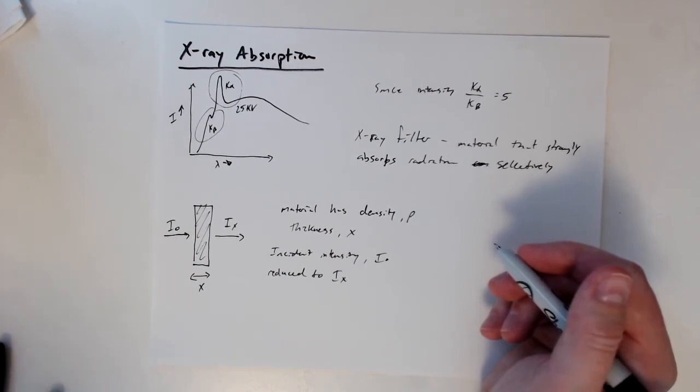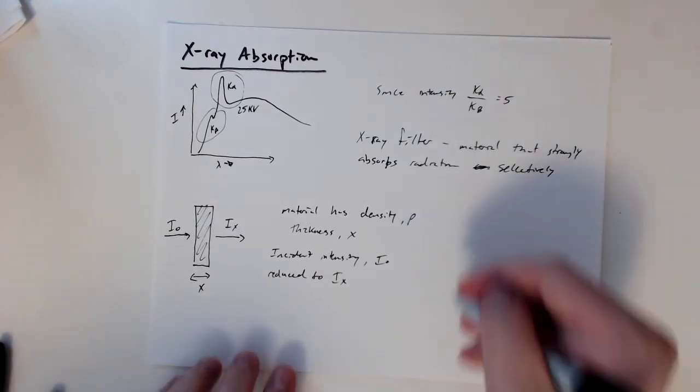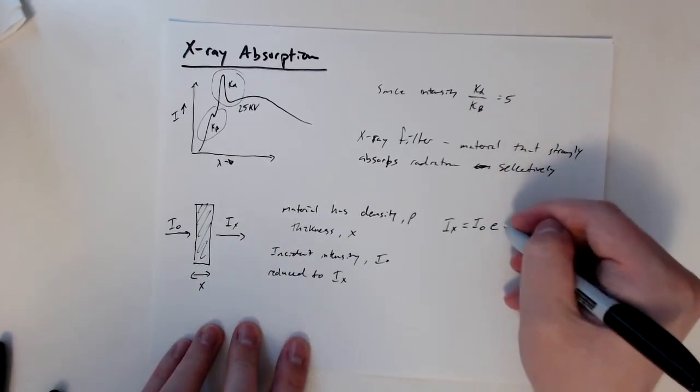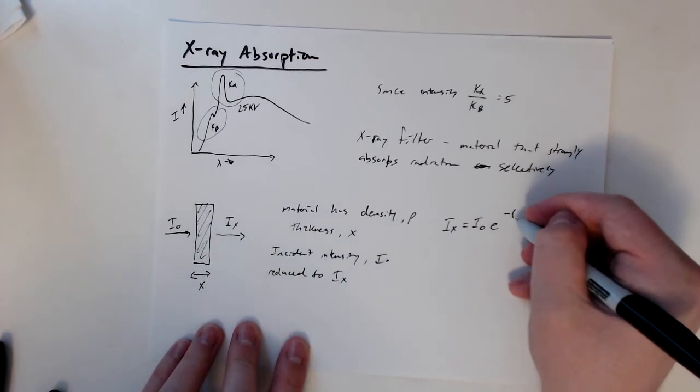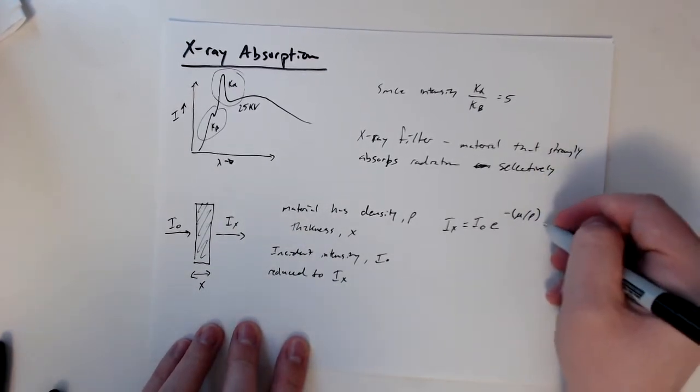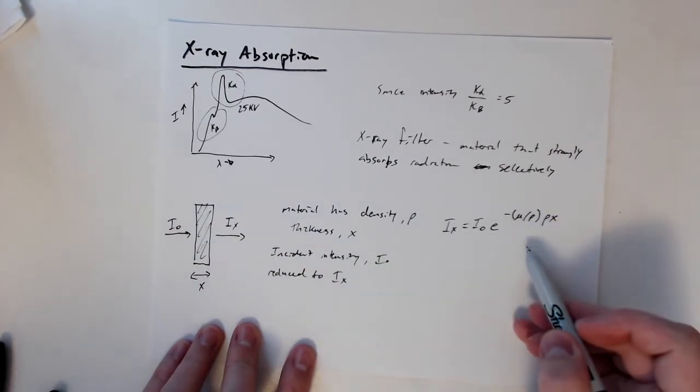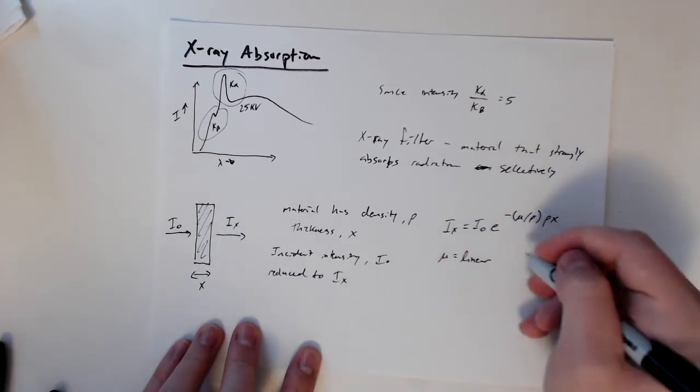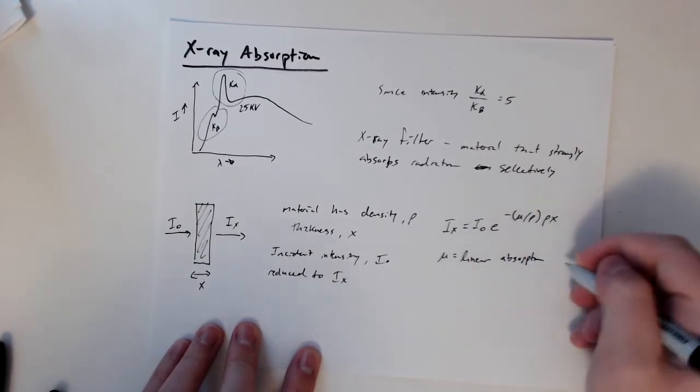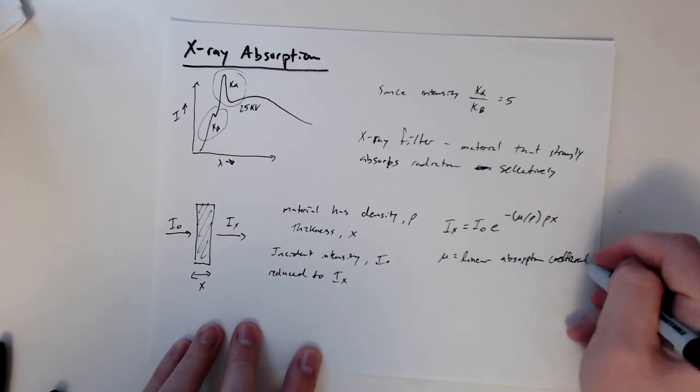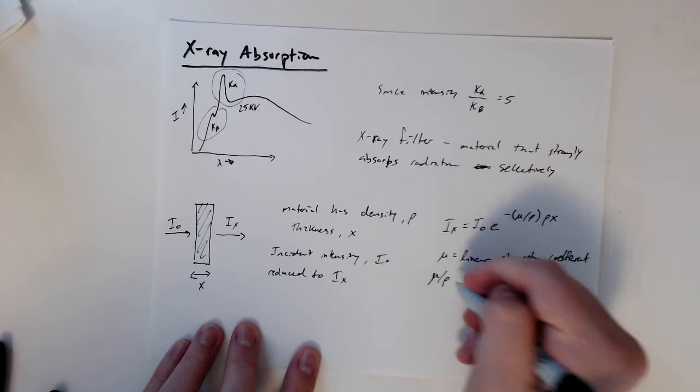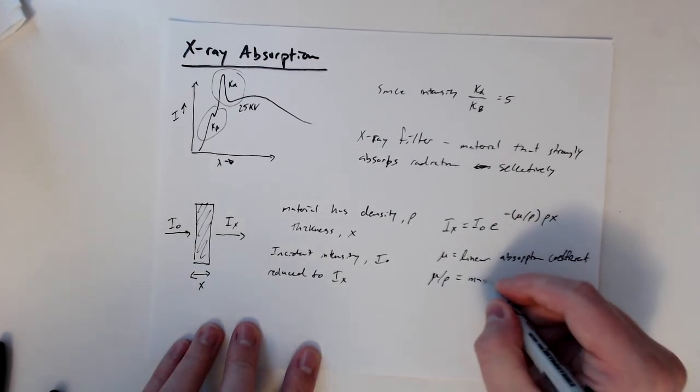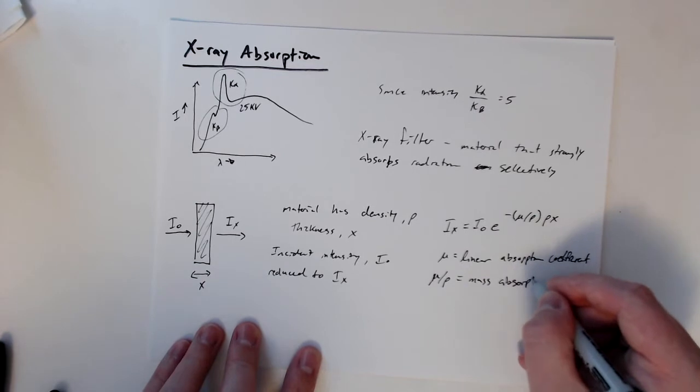If we want to find this intensity, we have a well-defined equation. We can get Iₓ as a function of the incident intensity by an exponential. This is an exponential equation where μ is the linear absorption coefficient, and μ/ρ is the mass absorption coefficient.